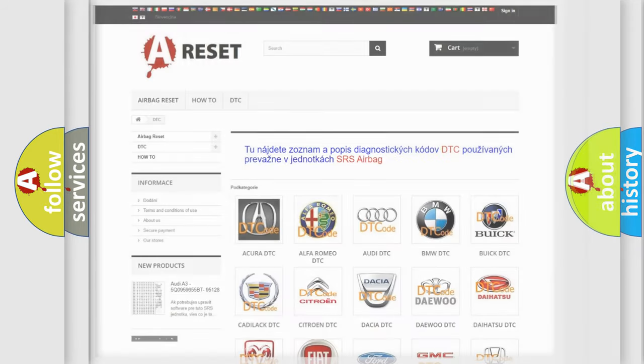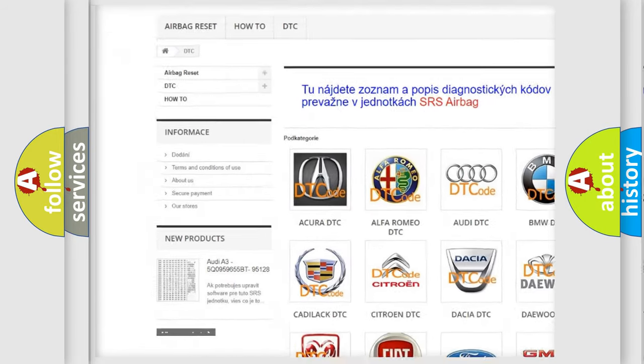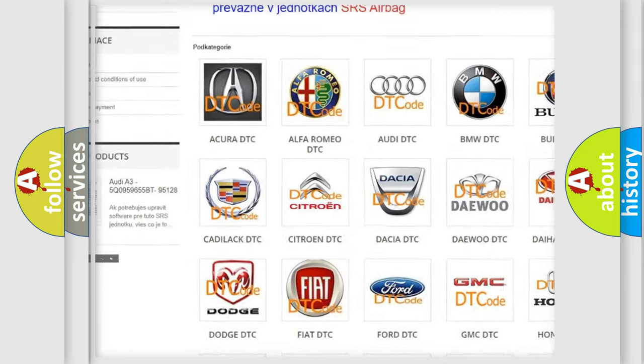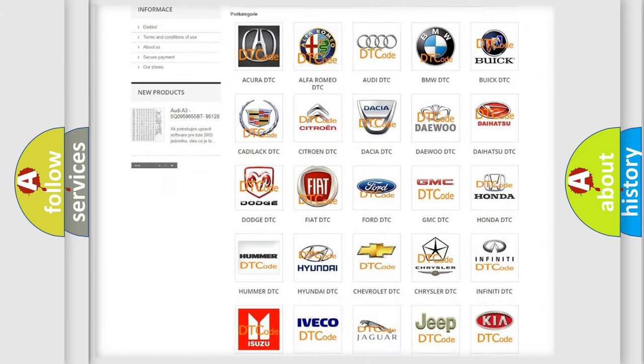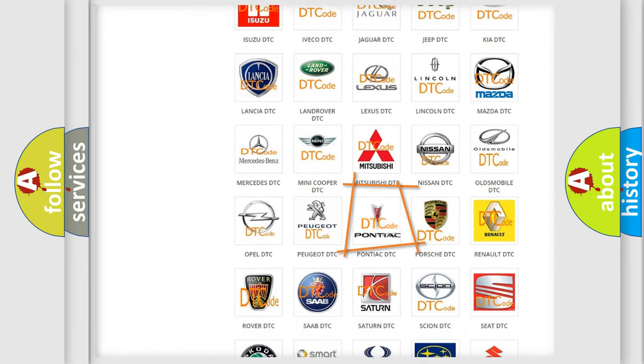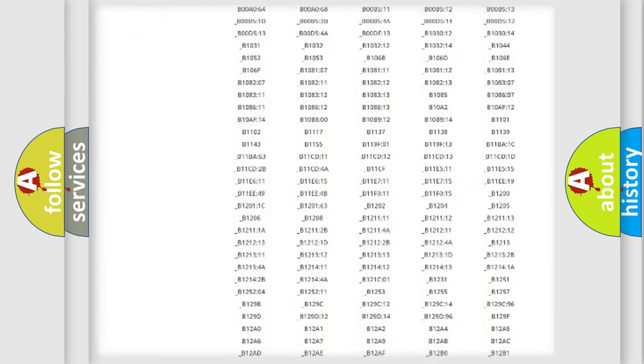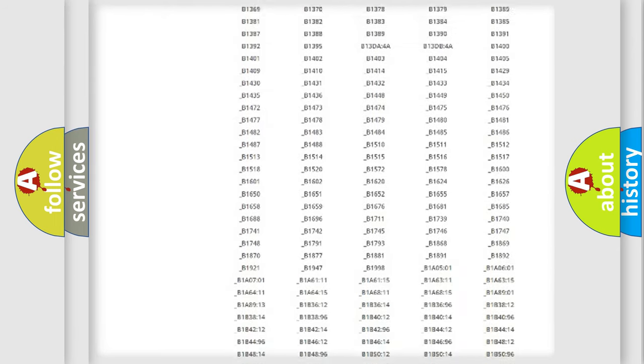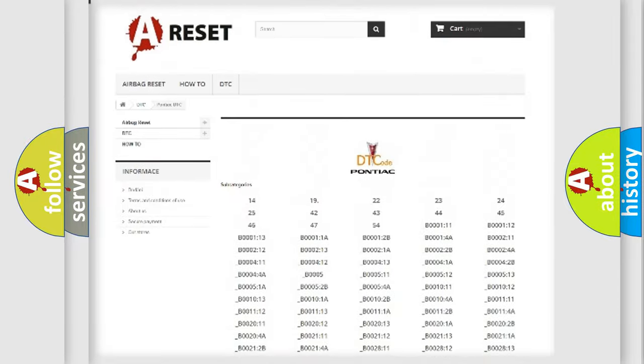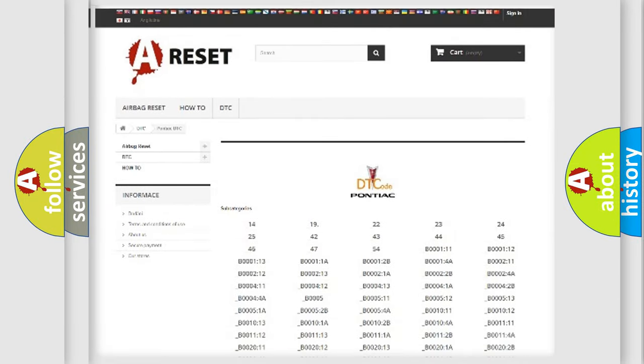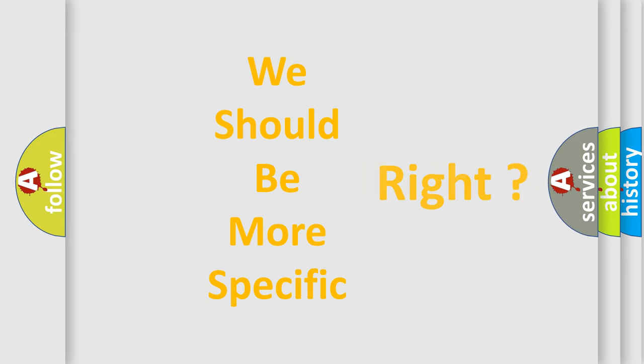Our website airbagreset.sk produces useful videos for you. You do not have to go through the OBD2 protocol anymore to know how to troubleshoot any car breakdown. You will find all the diagnostic codes that can be diagnosed in Pontiac vehicles, and many other useful things. The following demonstration will help you look into the world of software for car control units.